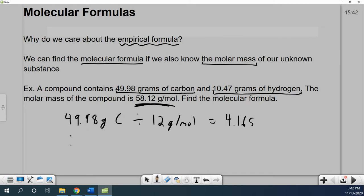And I've got 10.47 grams of hydrogen divided by basically 1.008, that's 1.01 grams per mole. 10.47 divided by 1.01 gives me 10.36.